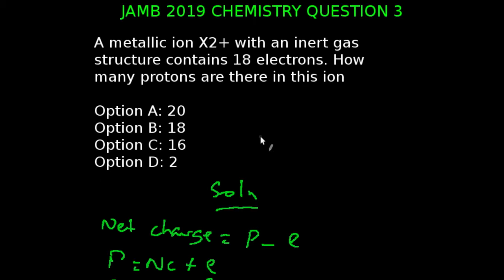You're looking at question three of the JAMB 2019 chemistry examination. A metallic ion X²⁺ with an inert gas structure contains 18 electrons. How many protons are there in this ion? The correct answer to this question is option A, which is 20.